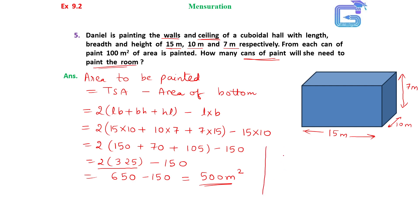Now, what we can see from the question is that from each can of paint, 100 meter square of area is painted. That means 100 meter square needs one can. So, to paint 500 meter square, we need 500 divided by 100. That means 5 cans will be needed to paint 500 meter square.